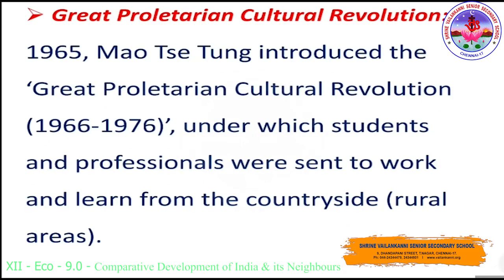Mao introduced the Great Proletarian Cultural Revolution from 1966 to 1976, under which students and professionals were sent to work and learn from the countryside, that is, rural areas. Russia had a conflict with China and withdrew the professionals who had earlier been sent to China to help in the industrialization process.